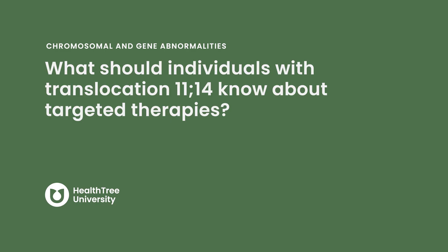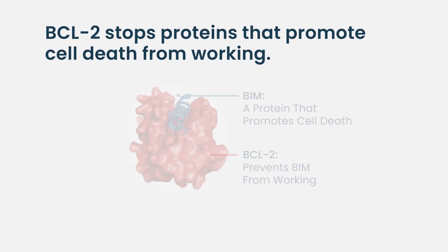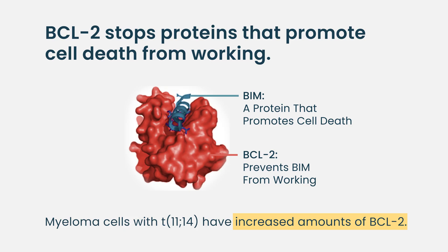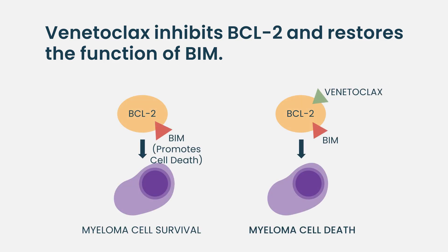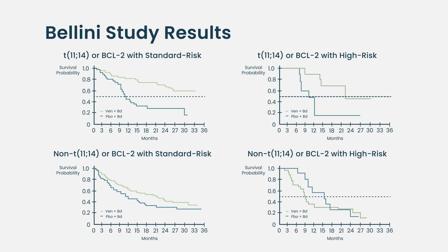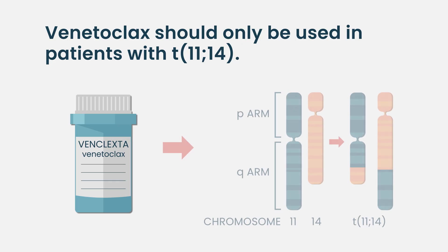The nice thing about the 11;14 translocation is that we now have a therapy that can actually target patients with this change. Something called BCL2 — that's a pathway that is upregulated in myeloma cells with this specific genetic translocation — and we can target that BCL2 with venetoclax so that it goes after the myeloma cells. We've had many studies with venetoclax in lymphoma and leukemia, and it's already approved for certain leukemias. In myeloma, an initial study included all myeloma patients, but unfortunately it didn't work for everybody and caused toxicity in patients without the translocation or elevated BCL2.